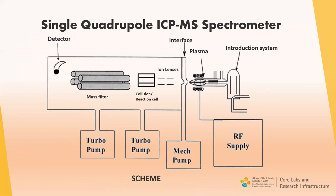As 90% of all ICP-MS spectrometers used in laboratories worldwide are quadrupole mass spectrometers, today we will consider the principles and applications of this type. The key parts of the quadrupole ICP-MS spectrometer are: introduction system, plasma, interface, ion lenses, collision reaction cell, mass filter, and detector. Let us consider each part in detail to understand the main principles of the quadrupole ICP-MS method.